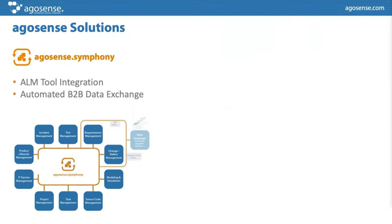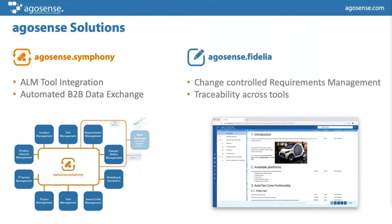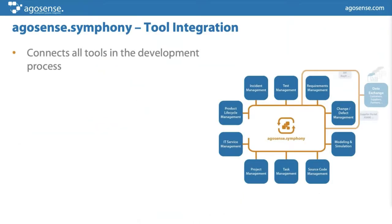Argosense Symphony has two main use cases: internal ALM tool integration and automated B2B data exchange, with a specialized solution for automotive defect exchange. The second tool is called Argosense Fidelia — a requirements management system with strong capabilities in change control and traceability, able to display information from other tools where data is related to requirements, test cases, or models. Today we will focus only on Argosense Symphony.